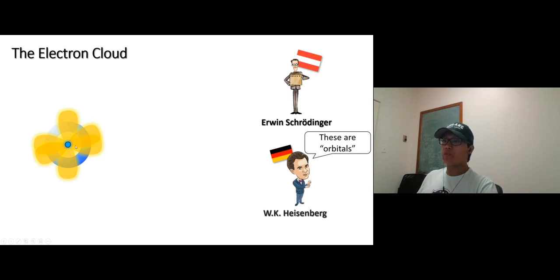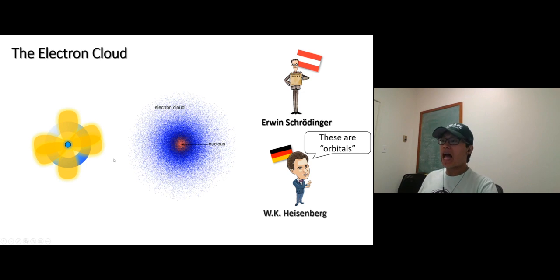These orbitals are overlapping. That's the reason why they came up with the electron cloud model or quantum model. Everything, all orbitals are overlapping. The closer to the nucleus, high electron density; further away, less dense electrons.